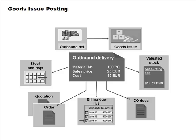Prior to goods issue posting, if you looked at the stock requirements list, suppose you have 500 units on hand but you just picked 100 units for a particular sales order — that 100 is dedicated to the sales order, so it can't be considered freely available. Once goods issue is posted, that requirement of 100 is removed, and stock is also reduced by that quantity.